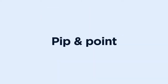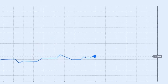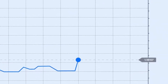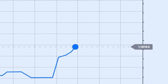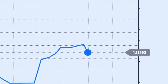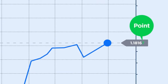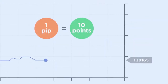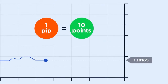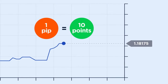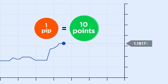PIP and POINT. Prices on the Forex market are constantly changing, but usually they tend to only change by a very small percentage. These tiny changes are represented by the last two digits in a quote, called PIP and POINT. When the price changes from 1.18165 to 1.18175, it means that it has increased by 1 PIP or 10 points.